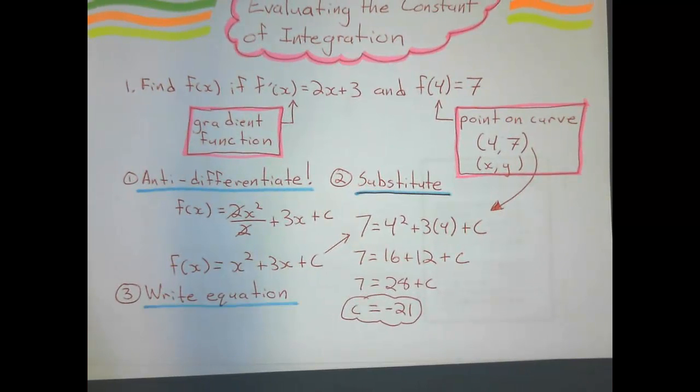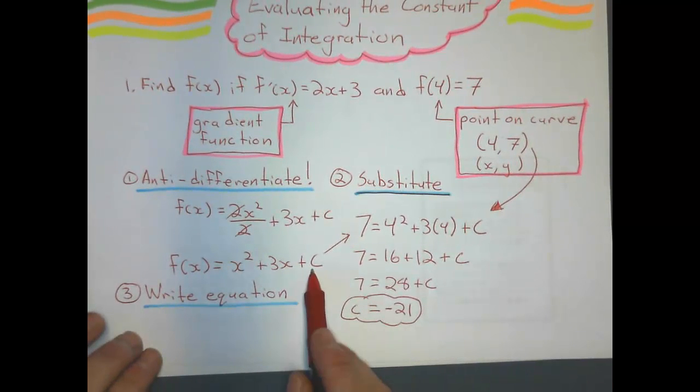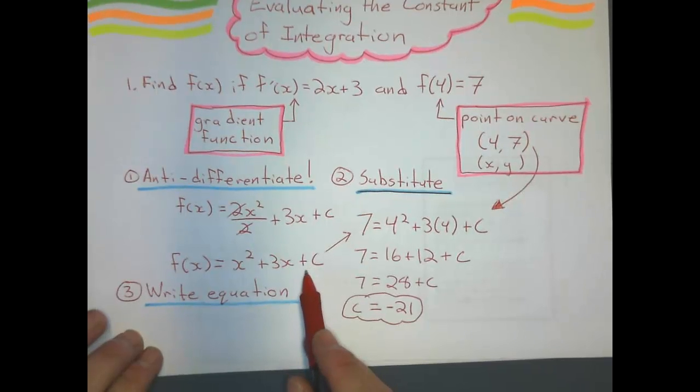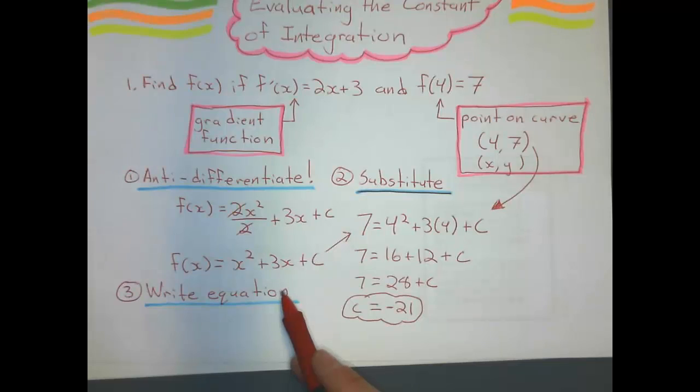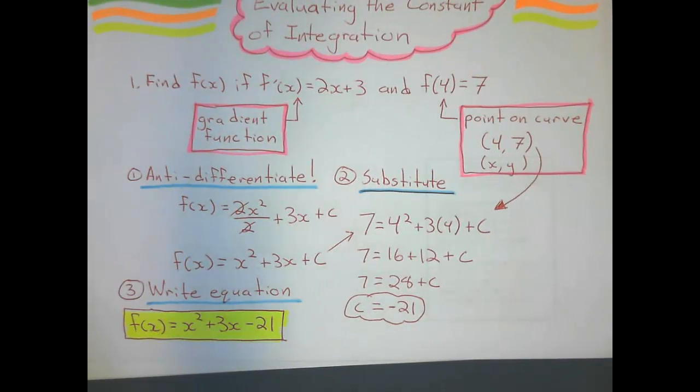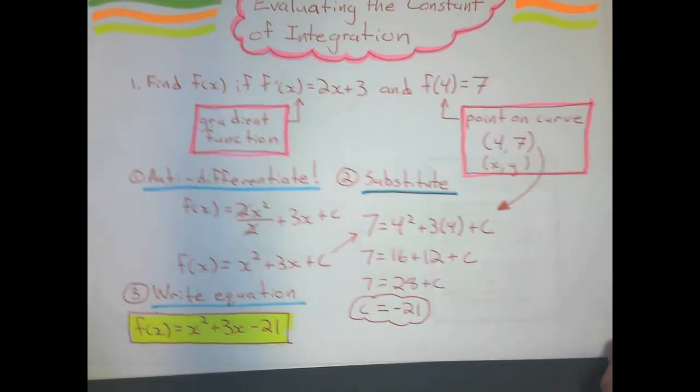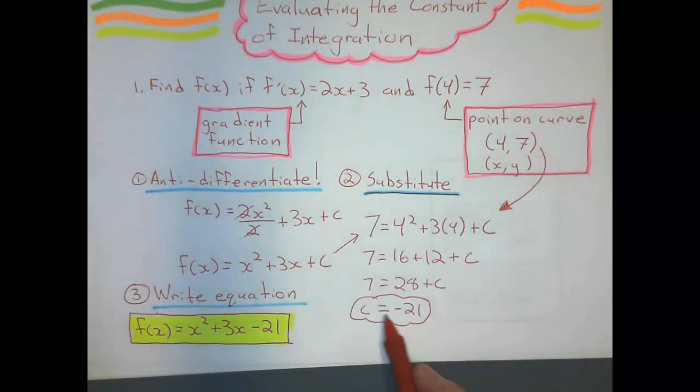The only thing I do there is substitute that negative 21 in for c. And if it's negative 21, don't go plus negative 21, just put minus 21. So the only difference is we substitute these points in, get that c value, and throw it back to the original equation right there.